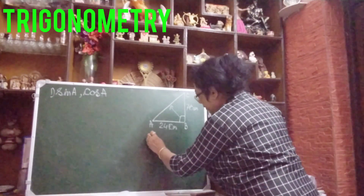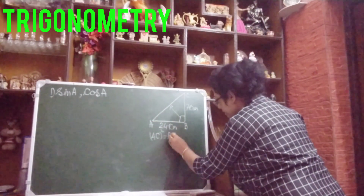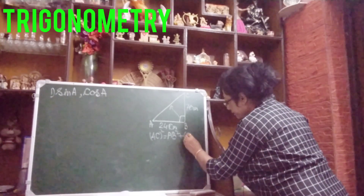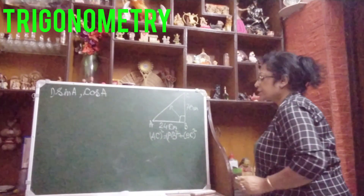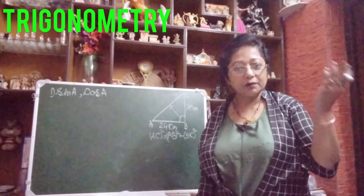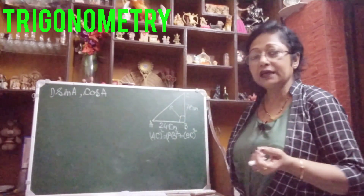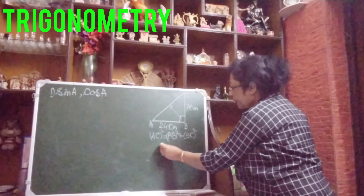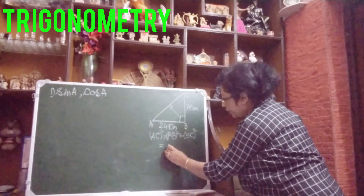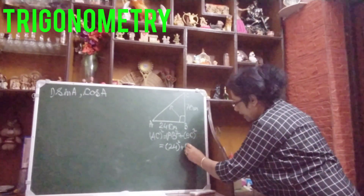We all know that the Pythagoras theorem states: hypotenuse square — here we write AC square — equals base square plus perpendicular square, that is AB square plus BC square. The sum of the squares of the two smaller sides equals the square of the longest side. So now we will find out what AC is. It is given AB equals the base equals 24 centimeters, so we write 24 square plus BC, that is 7 centimeters, so 7 square.